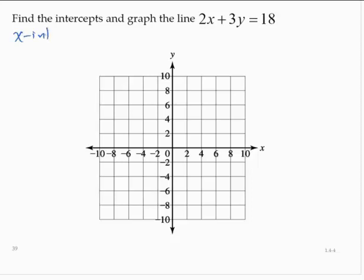So finding the x-intercept by letting y equal 0, we would have 2x plus 3 times 0 is 18. So then 2x equals 18, so x equals 9, which means that the x-intercept is 9, 0.